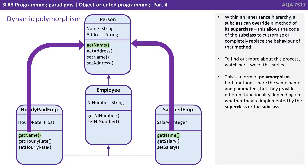Within an inheritance hierarchy, a subclass can override a method of its superclass. This allows the code of the subclass to customise or completely replace the behaviour of that method — to find out more about this process, watch part two of our OOP series. What we're seeing here is a form of polymorphism where both methods share the same name and parameters, but they provide different functionality depending on whether they're implemented by the superclass or the subclass.